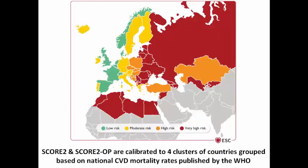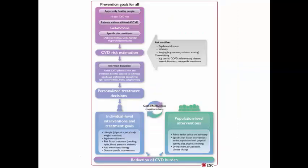On this map we can see the four clusters of countries based on national cardiovascular disease mortality rates published by the WHO: low risk, moderate risk, high risk, and very high risk countries. This classification is very important before selecting the SCORE2 algorithm, because the algorithm differs for each class. We can see that most Middle Eastern countries fall in the very high risk category.